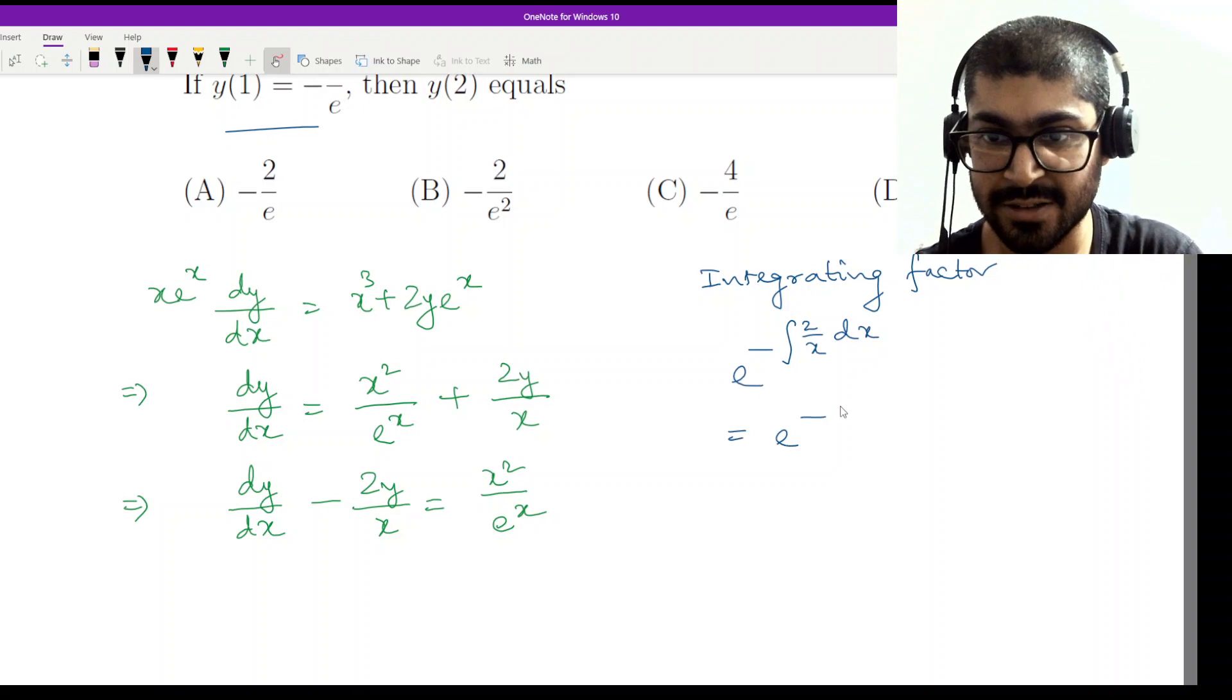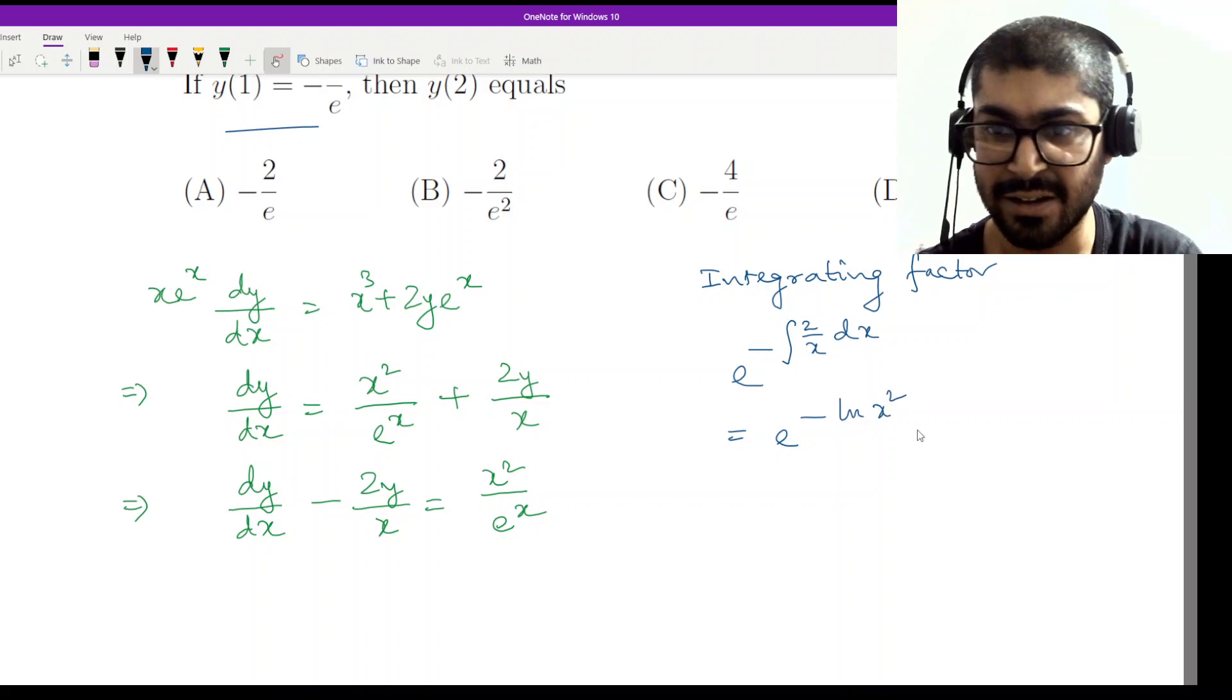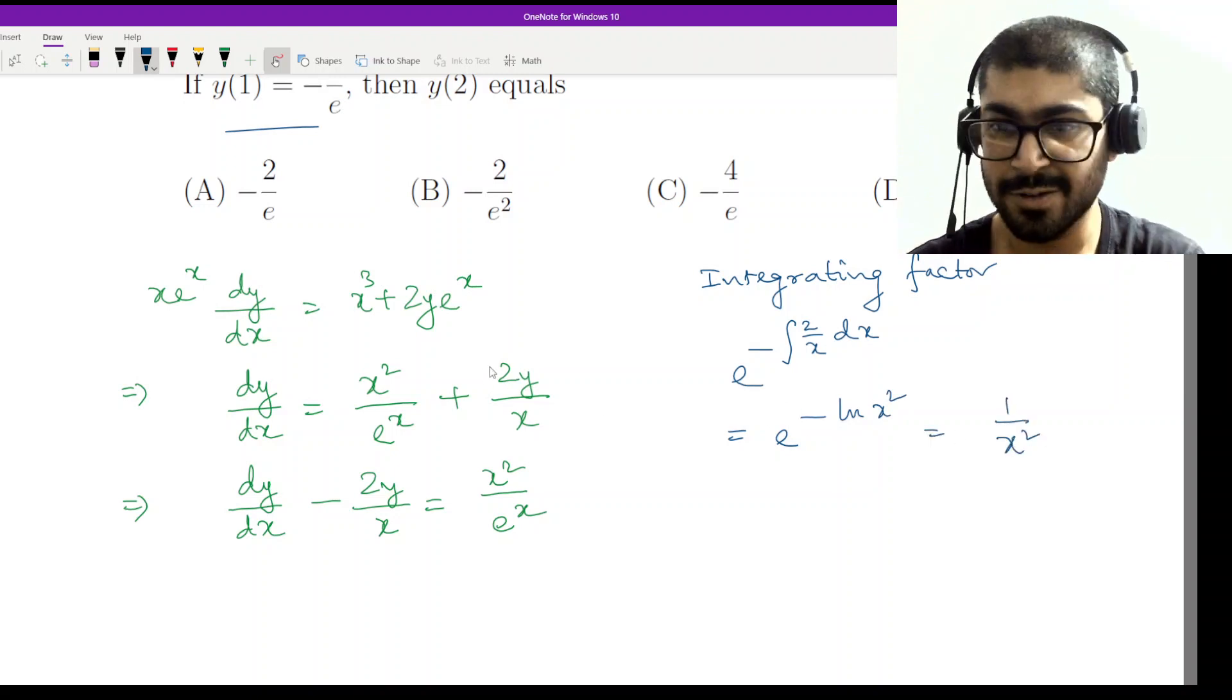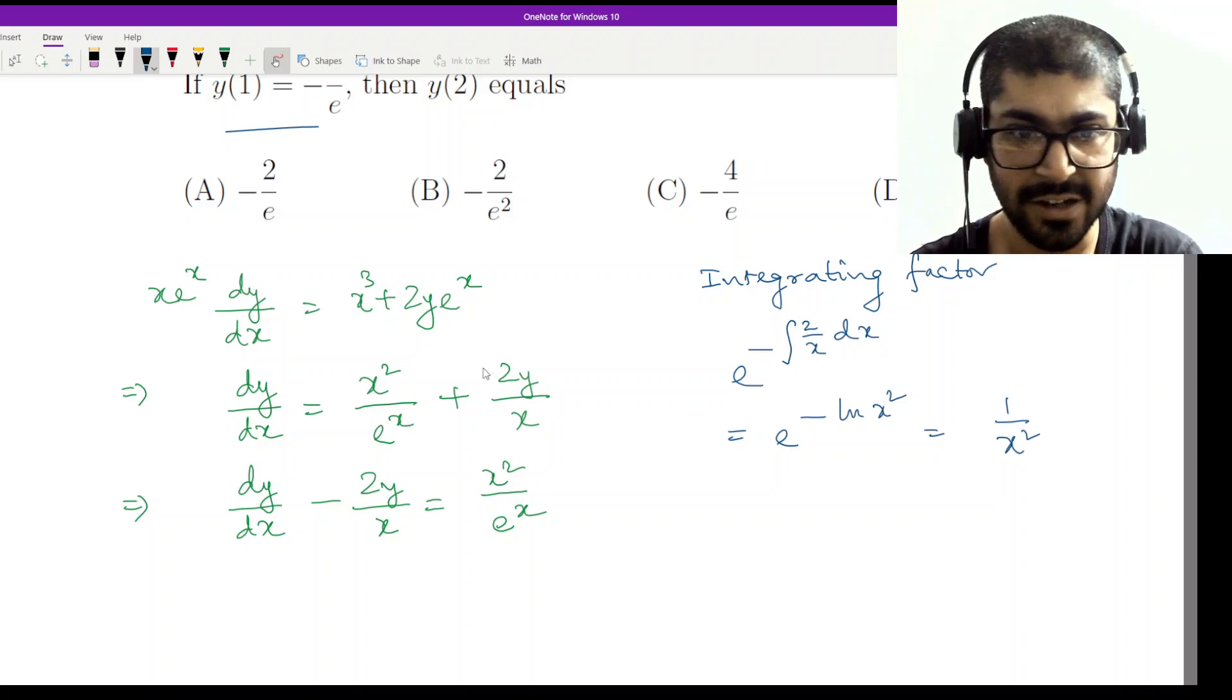This would be e^(-ln x²). So if I take the minus sign there, I'll end up with 1/x². Simple operation on exponents and logarithms.